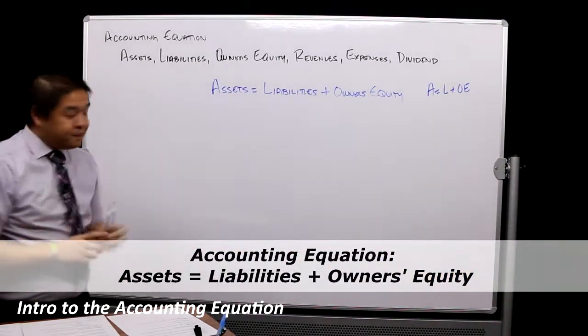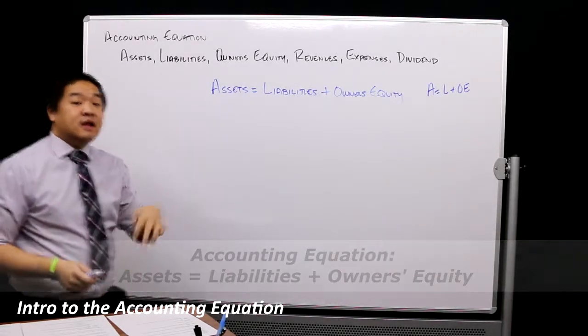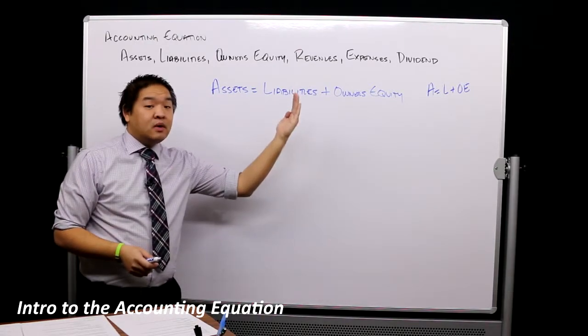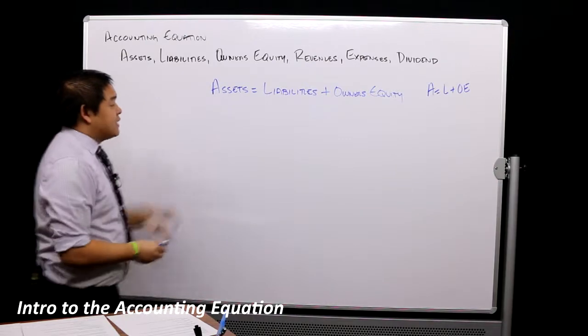The one thing to know about the accounting equation is that if one side goes up, the other side either needs to go up, or the same side needs to come down.